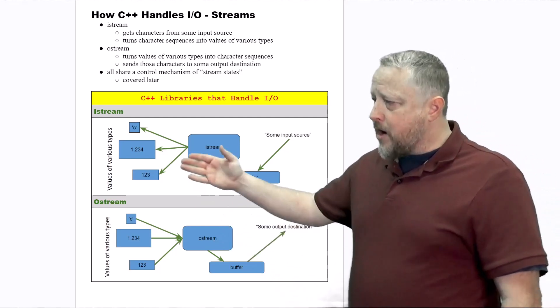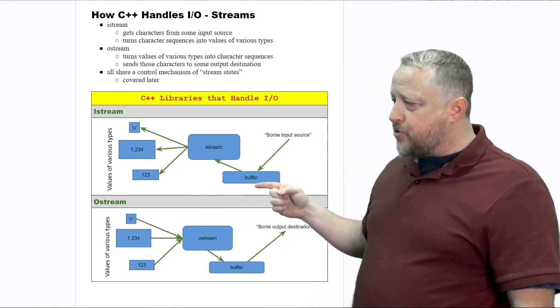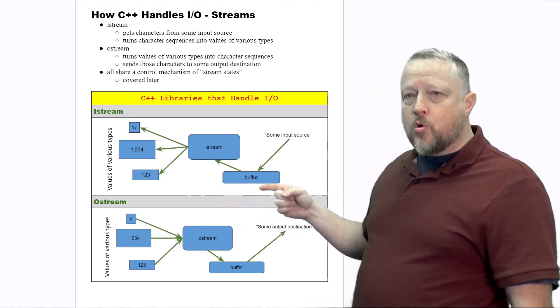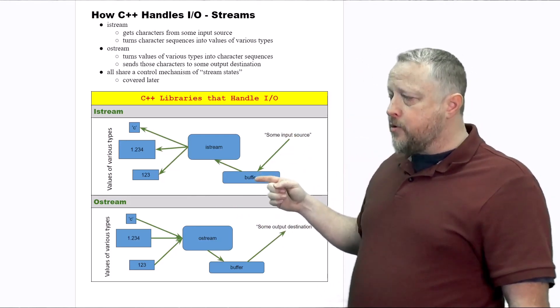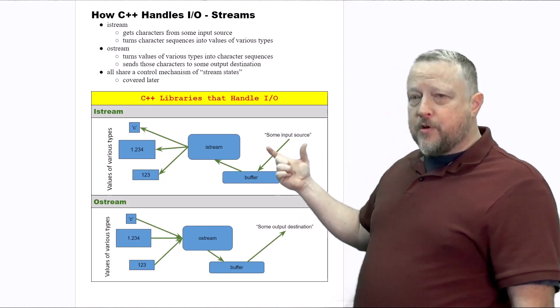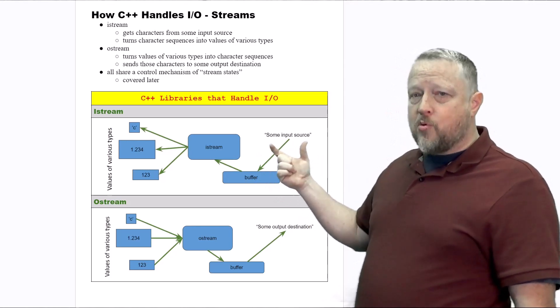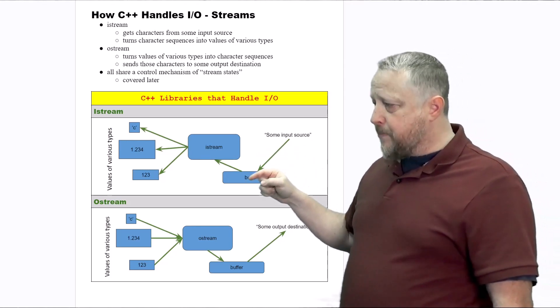When we're doing our iStream, we're getting characters from some type of input source that's then being thrown into a buffer. The input source could be a file, keyboard, something of that nature. It's being put into a buffer.